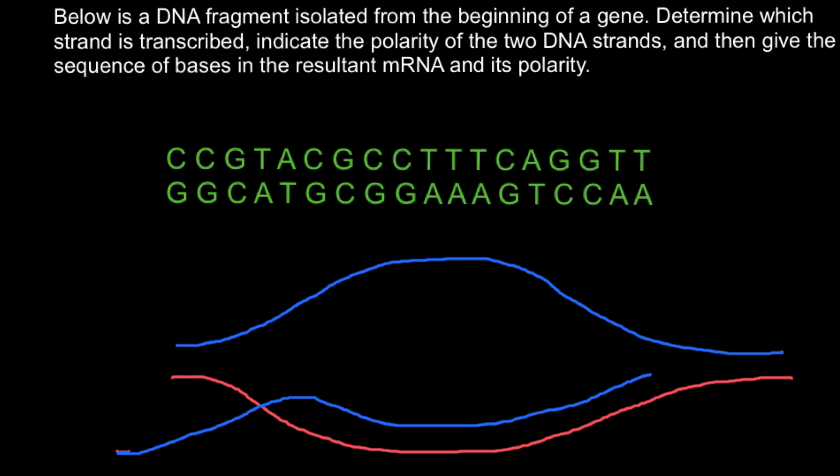One thing you have to remember is that mRNA always starts with the 5' end. So even when you look at a picture and you don't know where the 5' end is and where the 3' end is, if you know that this is the mRNA, you always know that the beginning is going to be the 5' end and the other end is going to be the 3' end.